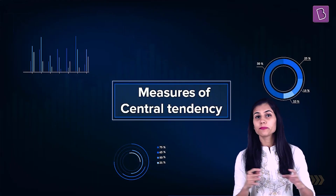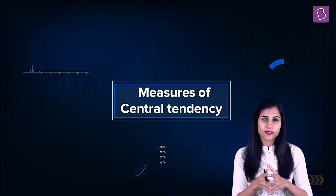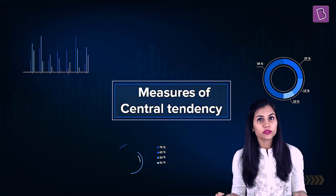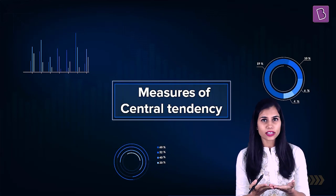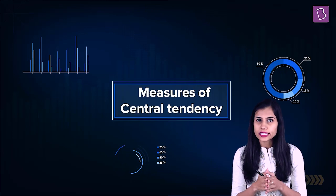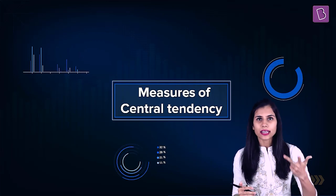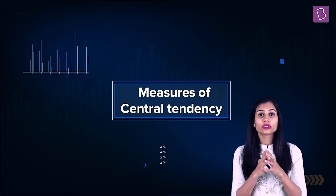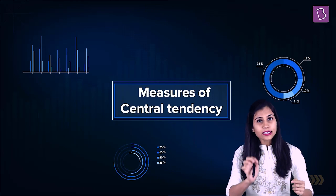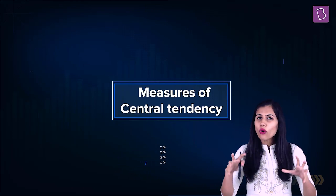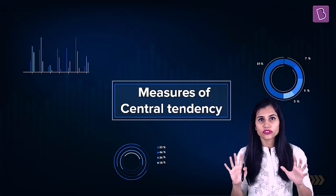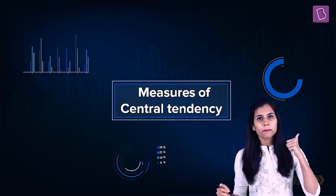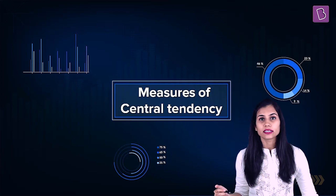We are now interested in computing a representative value for a given data. This value is called the central value of the data, and the various methods of finding the central value are called the measures of central tendency, which are your mean, median, and mode. The measures of central tendency give you one single figure which represents the entire data — one single figure around which all the observations of the data are concentrated and centered. So let's begin talking about mean, median, and mode for the distinct types of data that we've studied.